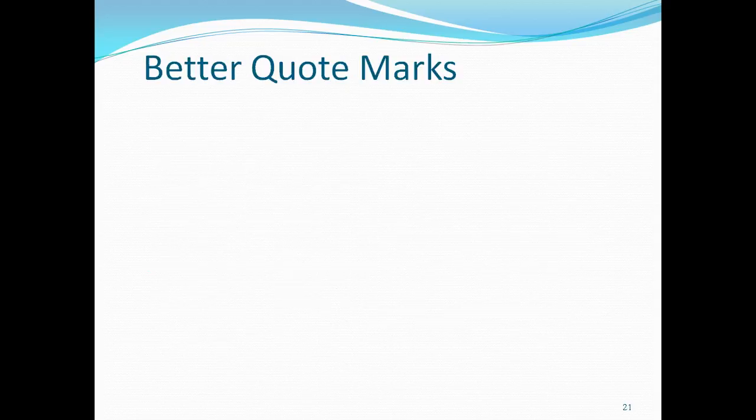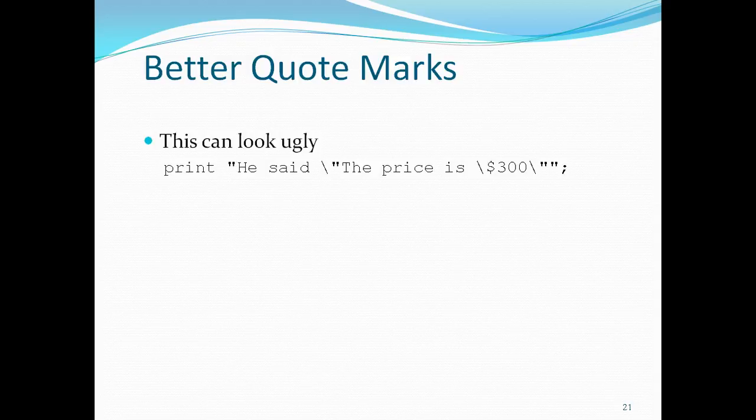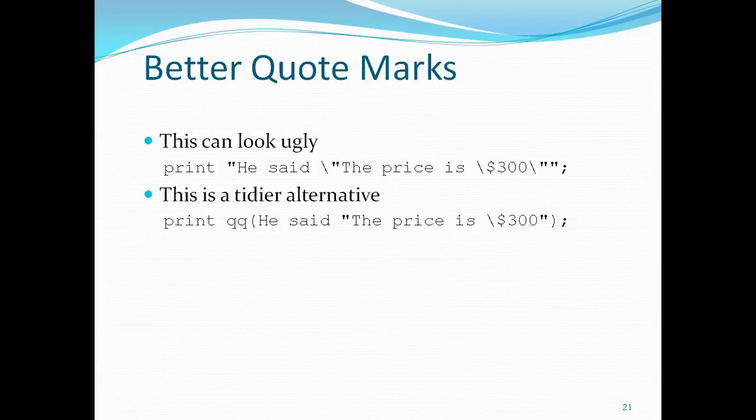So better quote marks. This can look ugly, so this is a tidier alternative. Either, I mean if you look at this, it looks like double quotes and it will be confusing, right? So we have another option or alternative, that is by quoting. If you wanted to quote double quotes, you can use a function called qq and place it in a bracket and you can just print it directly. And if you wanted to use single quotes, then you can use q, then it can print it.